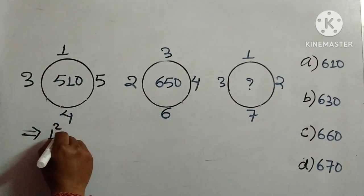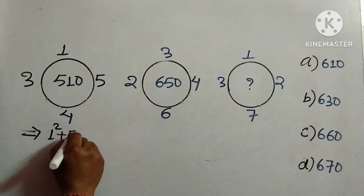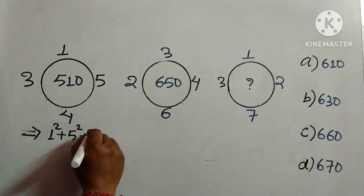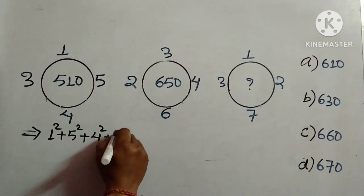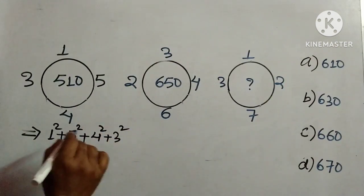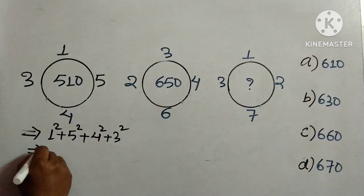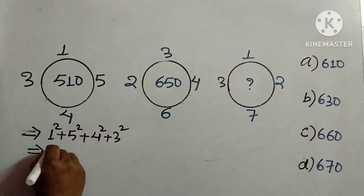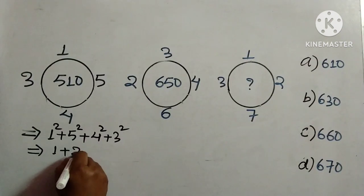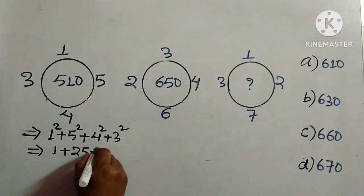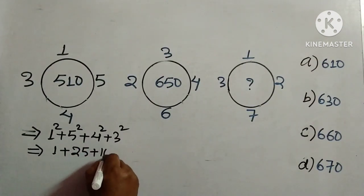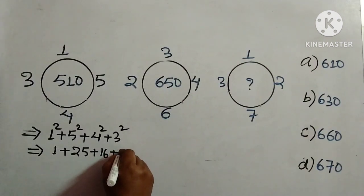1² + 5² + 4² + 3². We will first square them and see how close we can come to the answer. So 1² is 1, 5² is 25, 4² is 16, and 3² is 9. We will add them now.